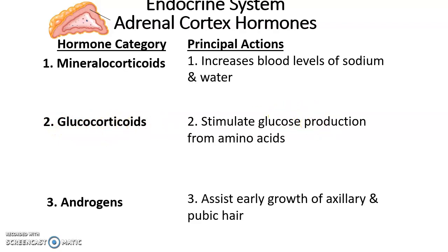Glucocorticoids — surprise, surprise — have to do with glucose. Glucocorticoids stimulate glucose production from amino acids, making glucose from non-carbohydrate sources. They take amino acids and convert them into glucose, and also urea, which is a waste product dumped into the bloodstream and eventually removed by the kidneys.